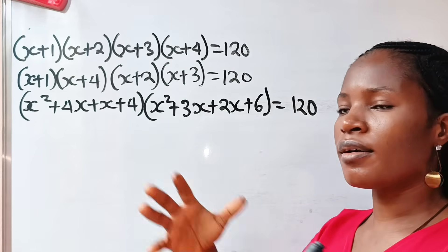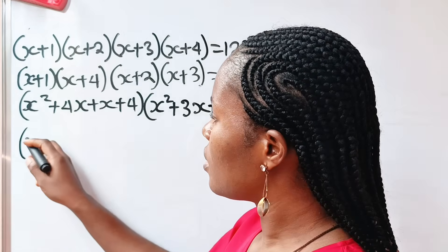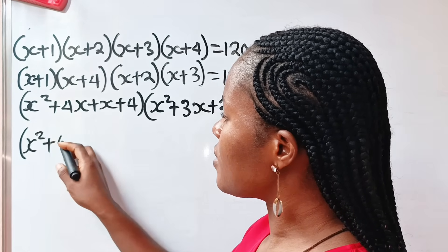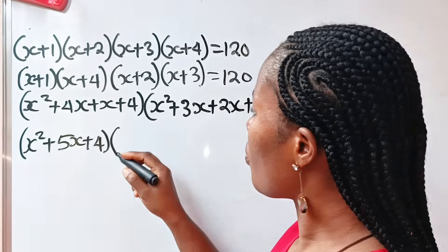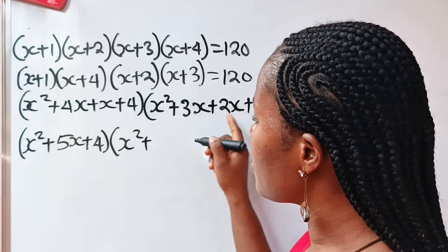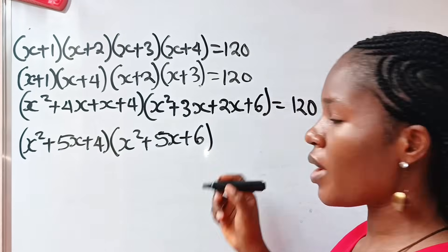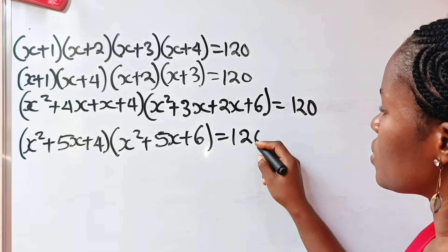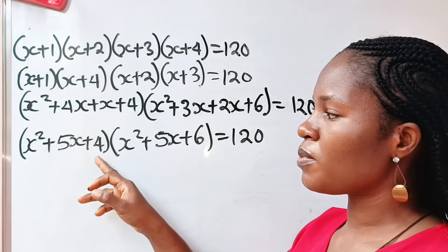Now let's simplify by adding everything together. For the first bracket: x squared plus four x plus x gives us x squared plus five x plus four. For the second bracket: x squared plus three x plus two x gives us x squared plus five x, plus six. This equals 120.